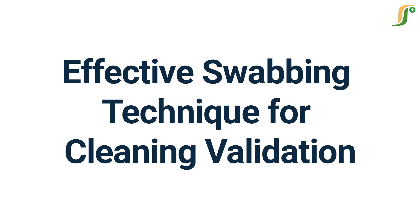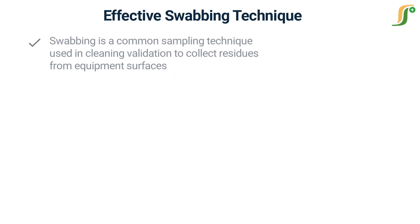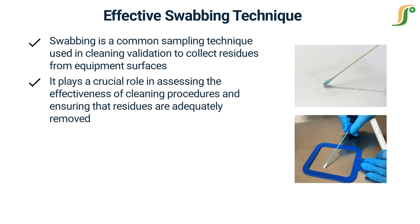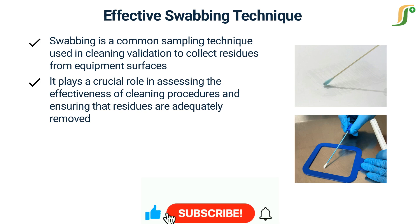Hi friends, welcome to a new learning video on PharmaGuideline. Today we will discuss the effective swabbing technique for cleaning validation. Swabbing is a common sampling technique used in cleaning validation to collect residues from equipment surfaces. It plays a crucial role in assessing the effectiveness of cleaning procedures and ensuring that residues are adequately removed.